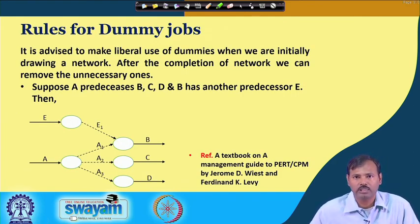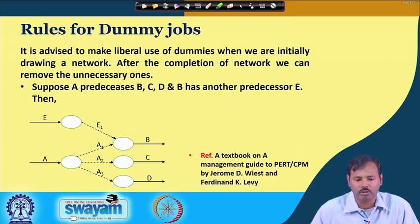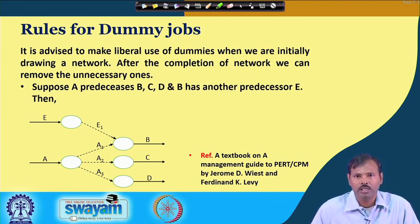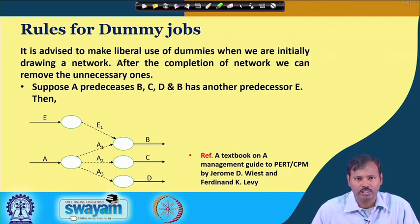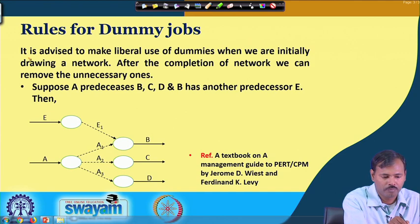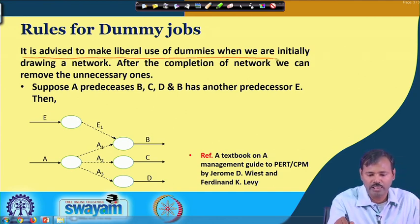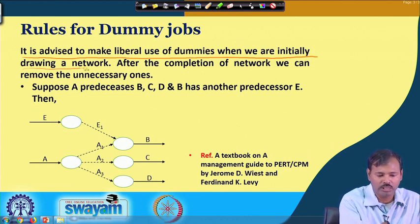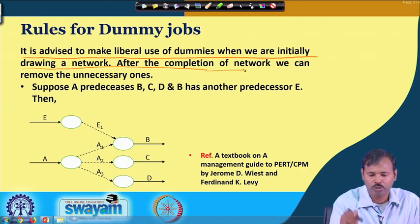In this lecture we will discuss dummy jobs specifically for the activity-on-arrow diagram, since dummy jobs are only required there. We will understand how dummy jobs can be placed in a complex network and how they can be assigned judiciously. The first requirement is that it is advised to make liberal use of dummy jobs when starting to construct the network at the very beginning.